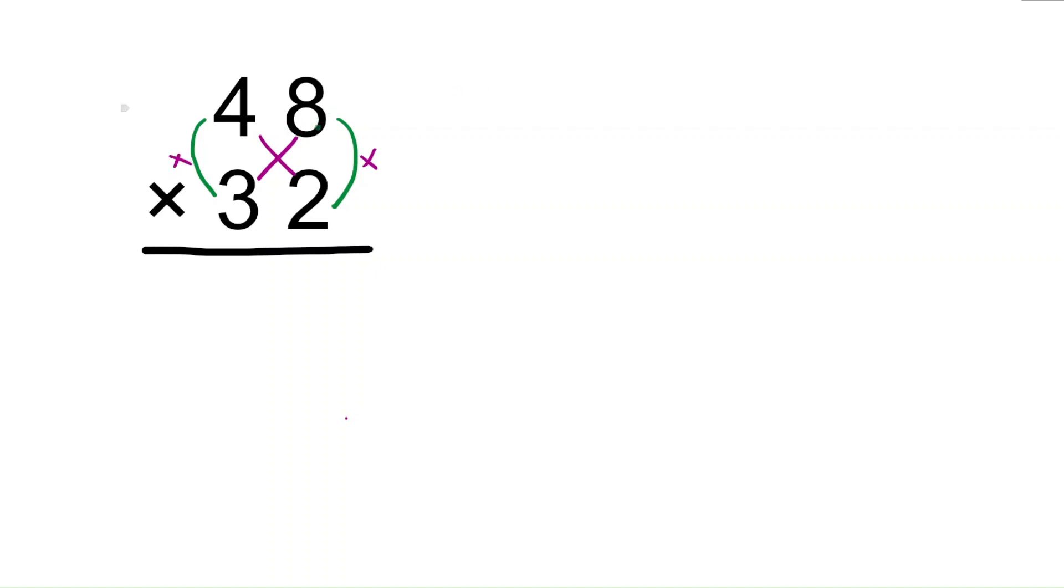Eight times two is sixteen, that's in the ones place. Four times three is twelve, that's in the tens place. Write it down. Now we need to do the cross: eight times three is twenty-four, four times two is eight.